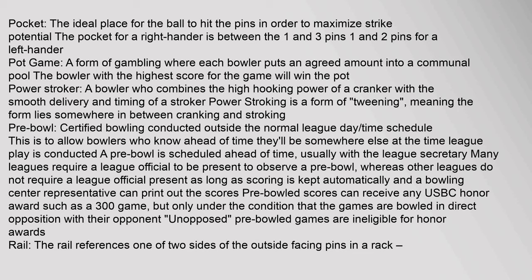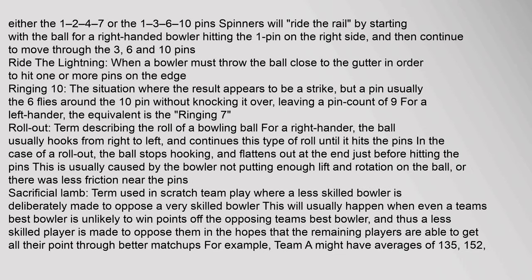Pre-bowl scores can receive any USBC honor award such as a 300 game, but only under the condition that the games are bowled in direct opposition with their opponent. Unopposed pre-bowl games are ineligible for honor awards. Rail: references one of two sides of the outside-facing pins in a rack — either the 1-2-4-7 or the 1-3-6-10 pins. Spinners will ride the rail by starting the ball hitting the one pin on the right side and continuing through the three, six, and ten pins.